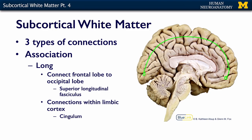There are also connections within the limbic system. Our limbic system is the cingulate gyrus here, and just deep to this gray matter is a big fiber tract called the cingulum. That is going to connect different areas of the limbic cortex together.